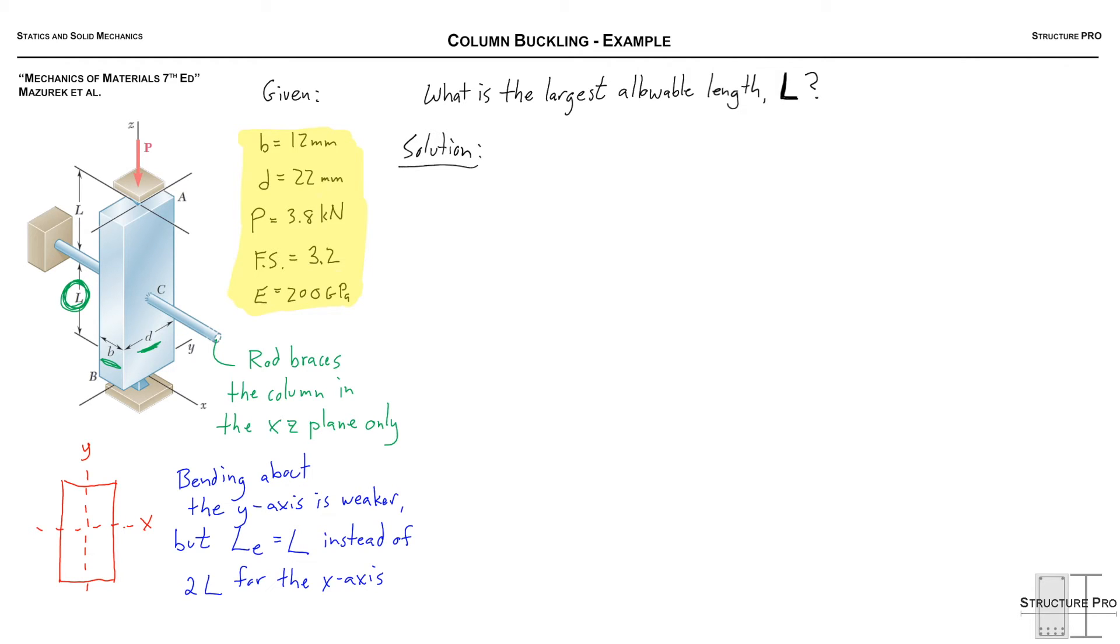So the first thing we need, we need to factor in this factor of safety and see what the actual critical load is. So P critical would be equal to P times our factor of safety.